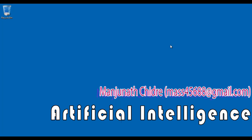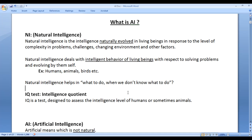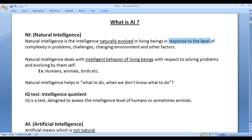Before we proceed and understand what is artificial intelligence, first we need to understand what is natural intelligence. Natural intelligence is the intelligence naturally evolved in living beings in response to the level of complexity in problems, challenges, changing environment and other factors.